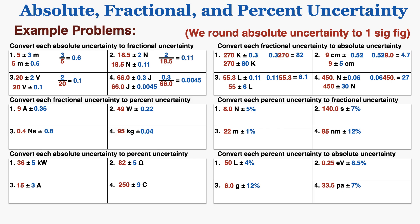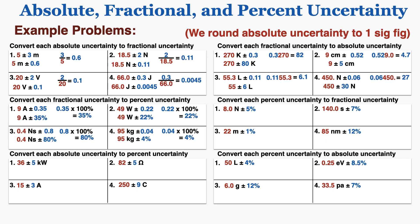Going from fractional uncertainty to percent uncertainty is one of the easiest conversions — you just multiply the fractional uncertainty by 100%. This is how you would write those fractional uncertainties as percent uncertainties. And to convert each percent uncertainty back to fractional uncertainty, you simply divide by 100%.